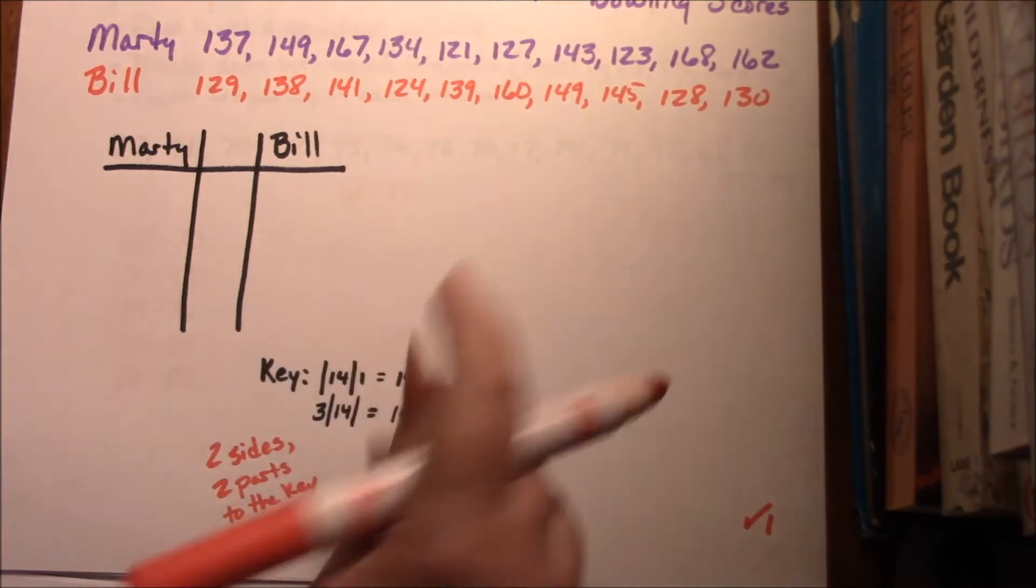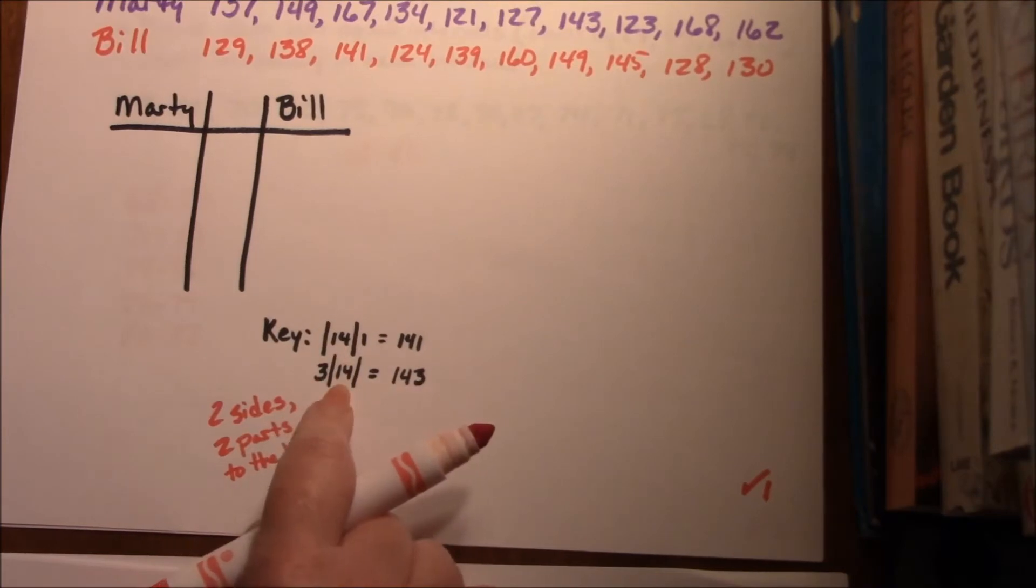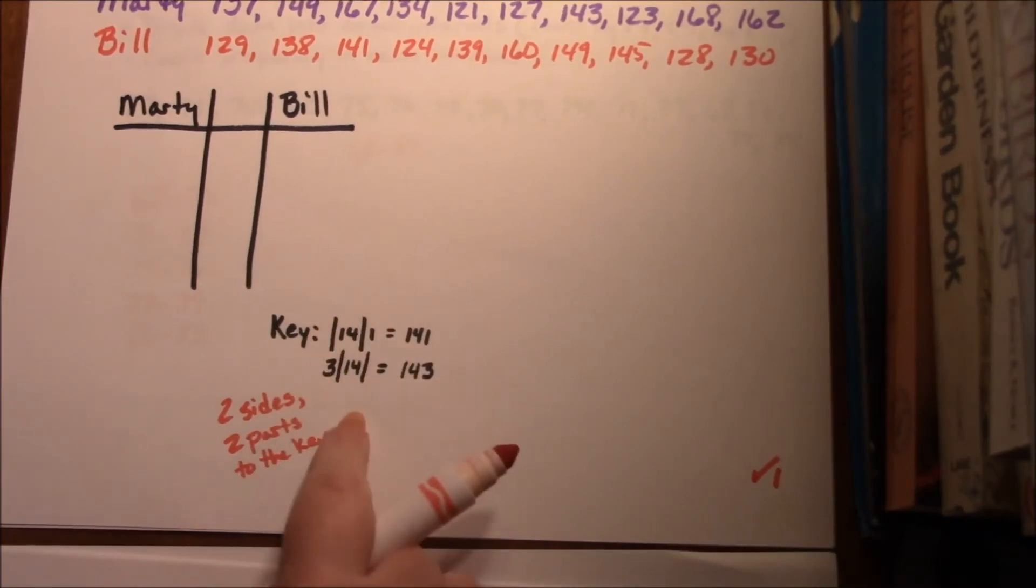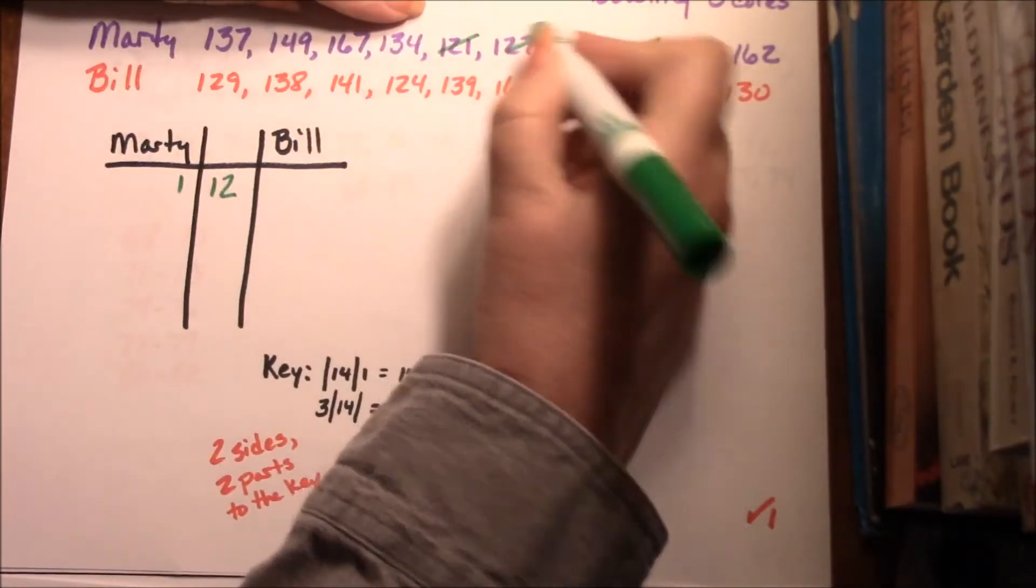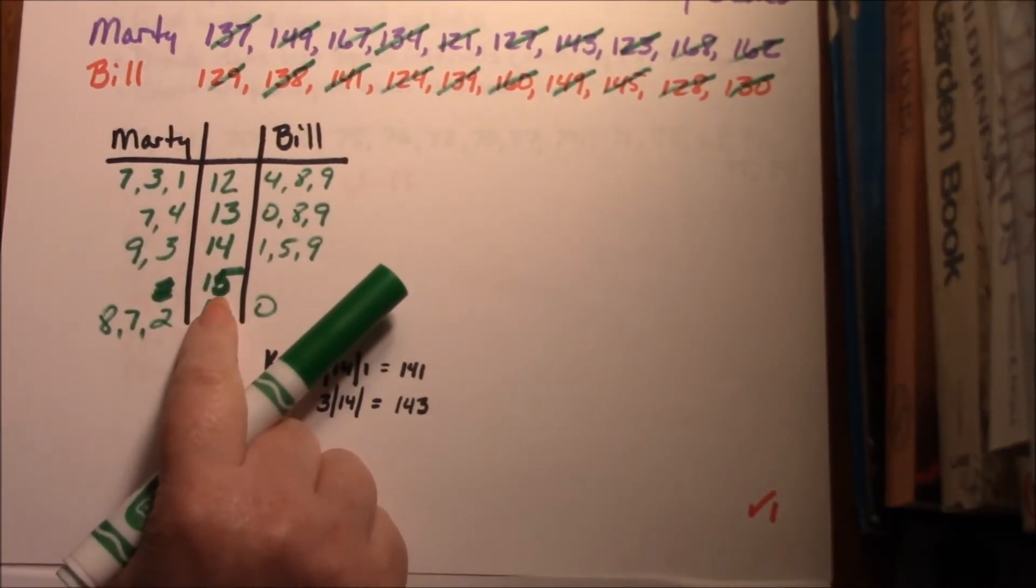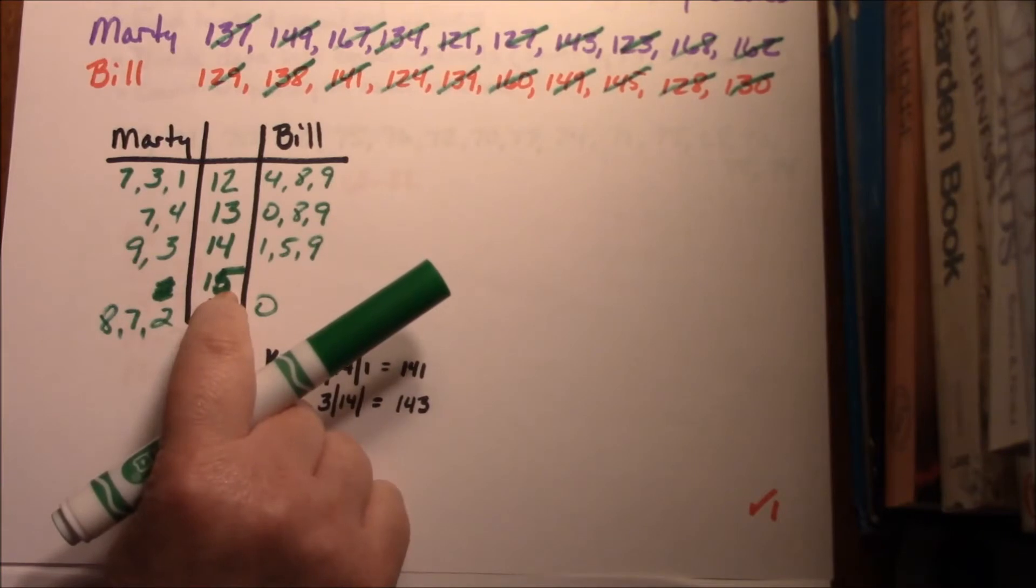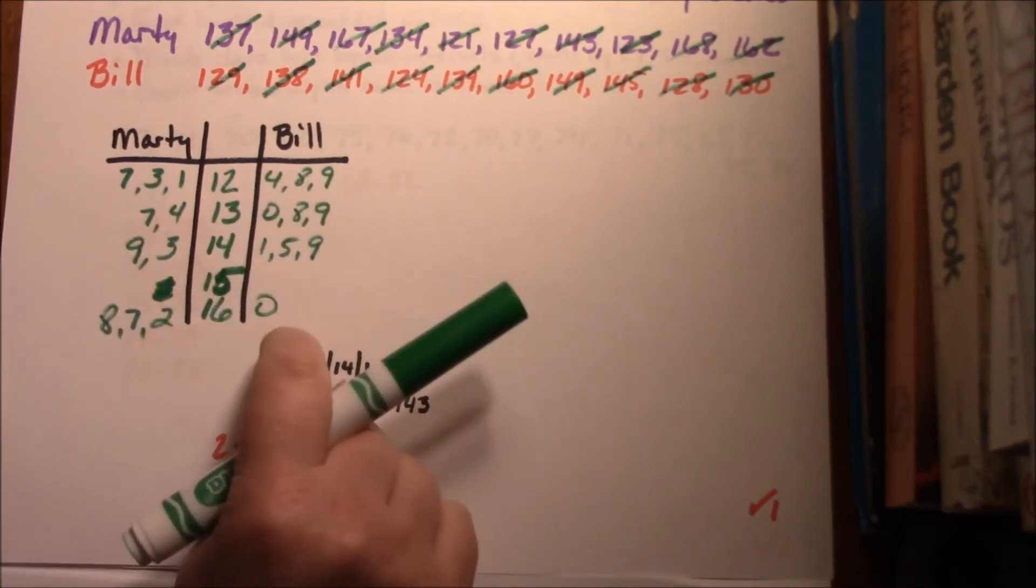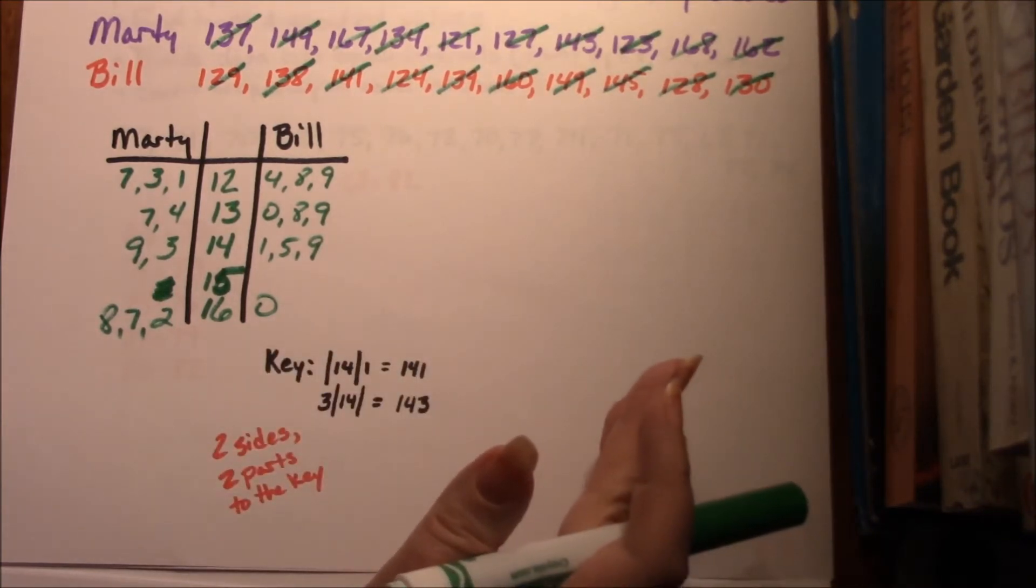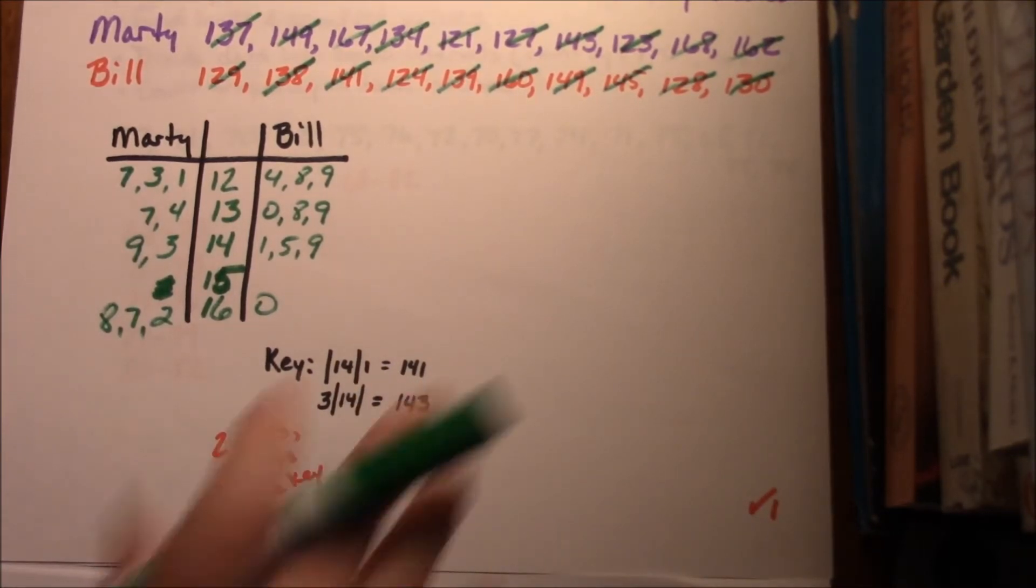The stem is the same and Bill's leaves go this way and Marty's leaves go this way. So sometimes a 14 and a 1 is a 141, and a 14 with a 3 on this side is a 143. Two sides, two parts to the key: 3 and 7, 3 and 9. We can see we do put the 15 in the middle to show that there's a break here. You don't want to skip it because you want this to pictorially show you what the information is.